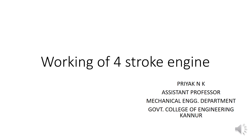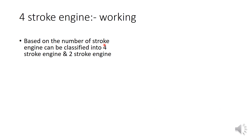Welcome back. We have already discussed different parts of an IC engine and the classification of IC engines. In this session, we will discuss in detail the working of a four-stroke engine and how it executes its cycle. Based on the number of strokes, we can classify an IC engine into two categories: four-stroke engine and two-stroke engine. A six-stroke engine also exists at the research level, but commercially only these two types are available.